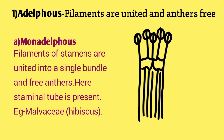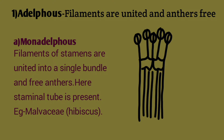In adelphous, filaments are united and anthers are free. Monadelphous means filaments of stamens are united into a single bundle with free anthers. Here a staminal tube is present. Example is the Malvaceae family, such as Hibiscus.